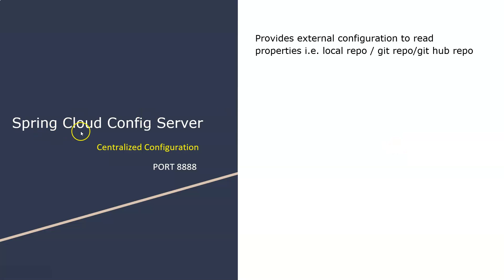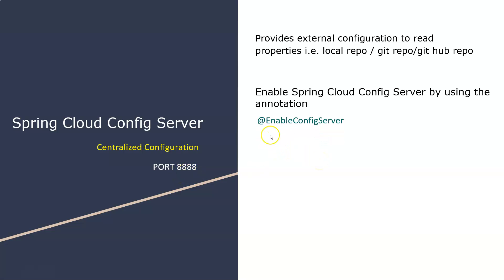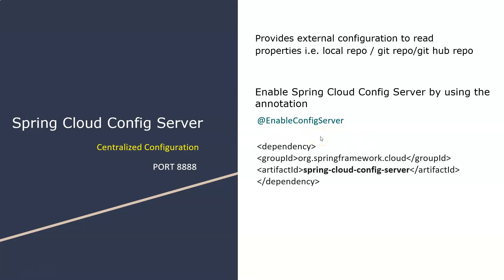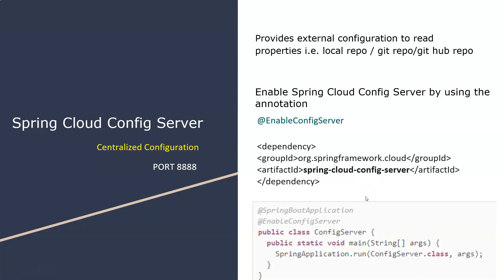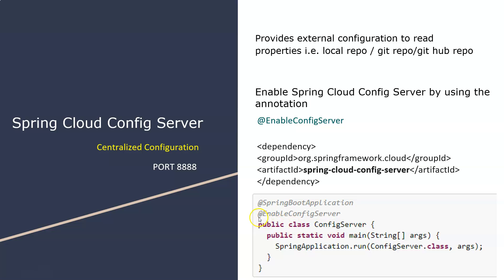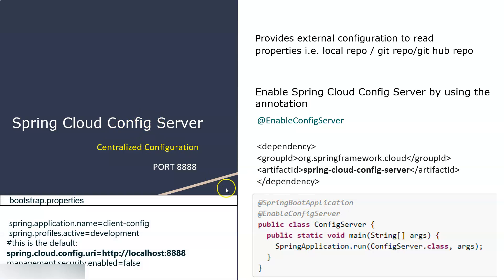Spring Cloud Config Server provides centralized configuration and runs on port 8888. To use it, you need to add the @EnableConfigServer annotation and include the relevant dependency in your pom.xml. For any application that wants to communicate with the Config Server, you use a bootstrap.properties file and put the URL of the Spring Cloud Config Server there, so your web service knows to fetch property values from the Config Server.